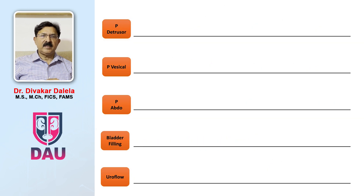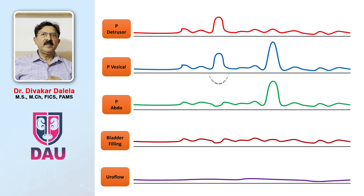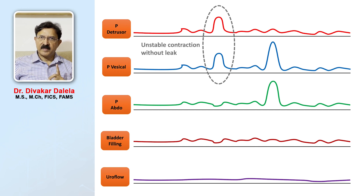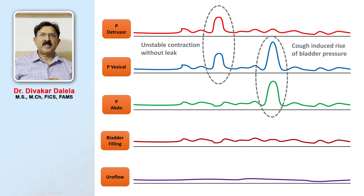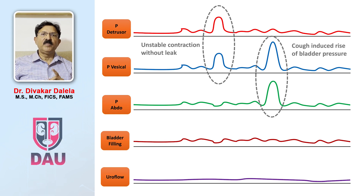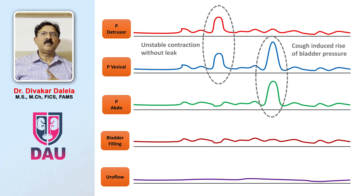In another example, you see the filling phase going on and that is how the pressure lines show the change. This is the unstable contraction without leakage — unstable contraction because the P-detrusor line moved up, P-vesicle line moved up, nothing happened on the P-abdominal. But in the second event, P-abdominal moved and P-vesicle moved, but nothing happened to the detrusor line. So this is a cough-induced rise in the bladder pressure. This is not an unstable contraction.